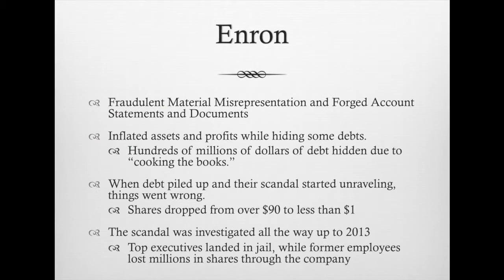The Enron Scandal is the largest securities fraud scandal in the history of the stock market. Fraudulent material misrepresentation and forged account statements and documents is when a company lies to investors to make it seem like their company is doing better than it actually is, giving them a reason to invest more money into said company. The misrepresented material can be created through forged account statements and documents, commonly known as cooking the books.